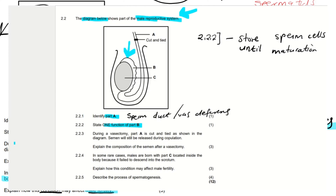The epididymis is this layer surrounding the testes. When the sperm cells are produced in the testes, they go to the epididymis immature, and when they reach the epididymis, it will store them until they are mature. Others may say it stores spermatids — that is also correct. Spermatids just means the sperm cells are not yet mature.